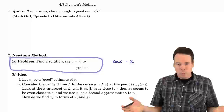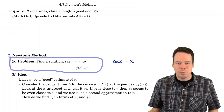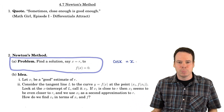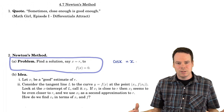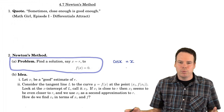Can we find the exact value of the solution to cos x equals x? Algebra doesn't seem to help here because we can't isolate x — it's trapped inside the cosine and also appears outside. So we might not be able to find it exactly, and maybe we should be content with approximating the solution. That's what Newton's method is about: approximating solutions to equations where algebra won't help.